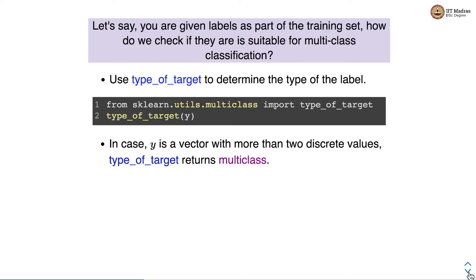If you are given labels as part of the training set, you can check if they are suitable for multi-class classification using type_of_target from sklearn.utils.multiclass. We simply supply the label matrix to type_of_target and it tells us the type of the target. In the case where the vector has more than two discrete values, type_of_target returns 'multiclass'.